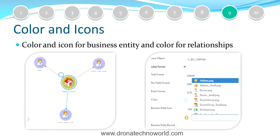The ninth feature is about user-friendliness and UI enhancement. Informatica is providing a more user-friendly approach by adding colors and icons to business entities, which are useful when users view data in hierarchy views or normal views. Once you select a business entity, you can define what icon to assign to it. For relationships, you can also choose different colors while creating relationships under the hierarchy and network sections.